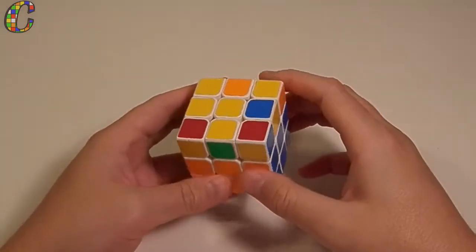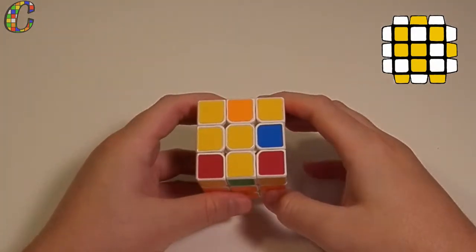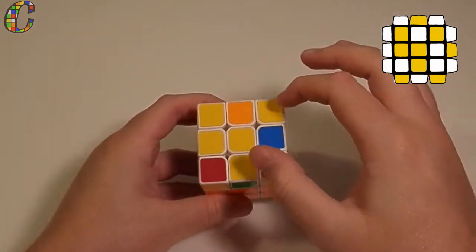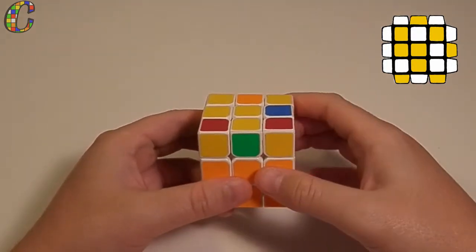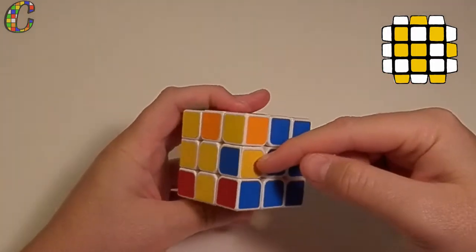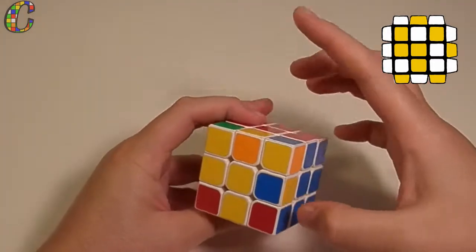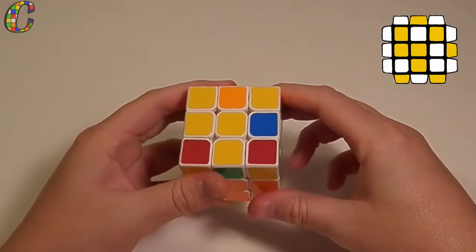The next case we're going to cover is OLL number 42. Now, the way I recognize this case is by seeing this glider shape in this orientation on top of the cube, and you have headlights in the front. Now, that's all you need, really, to recognize this case, but just so you know, this edge and this edge are facing out. So, once you have the case like this, you do the following algorithm.